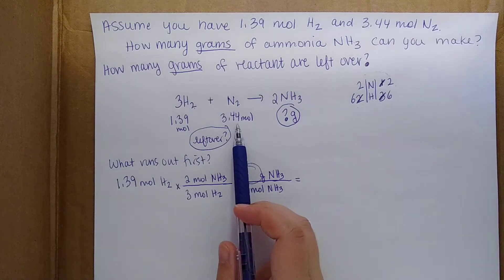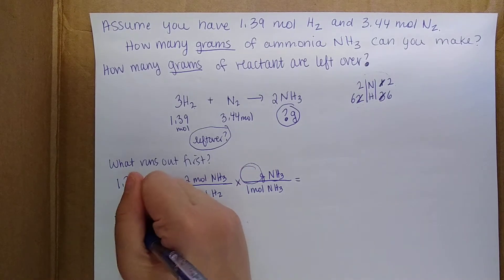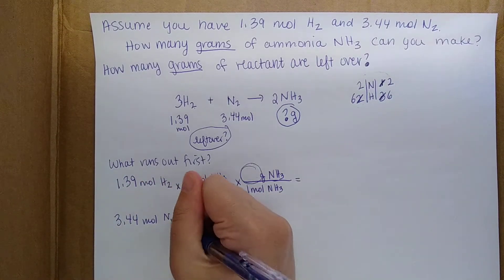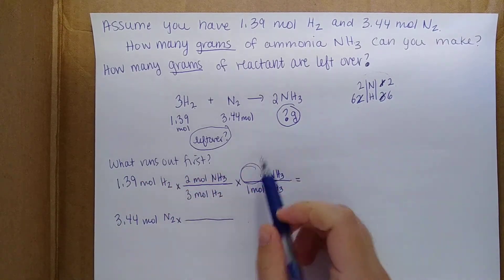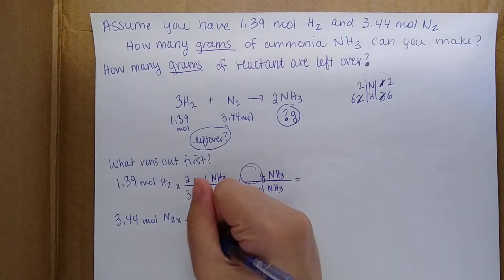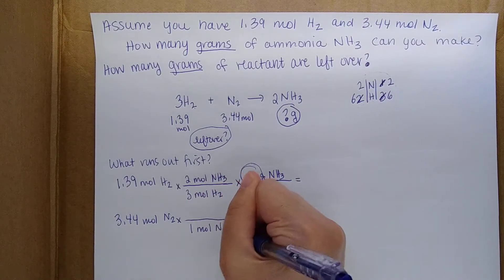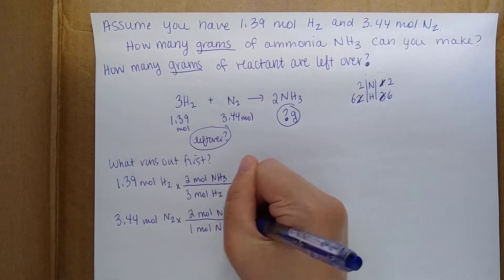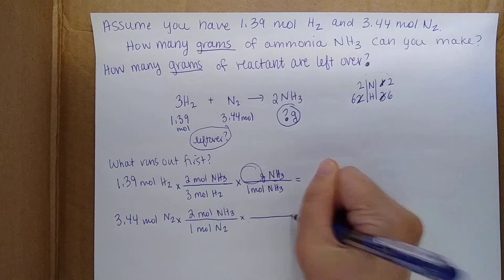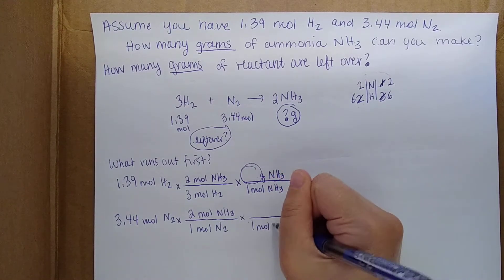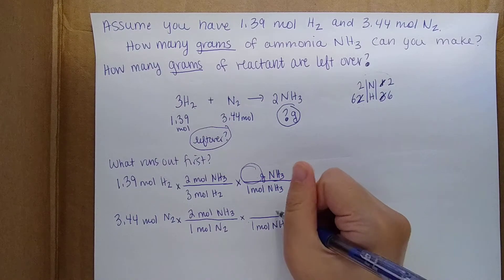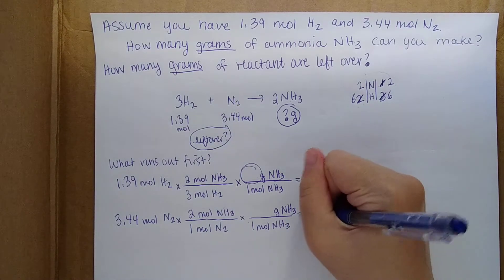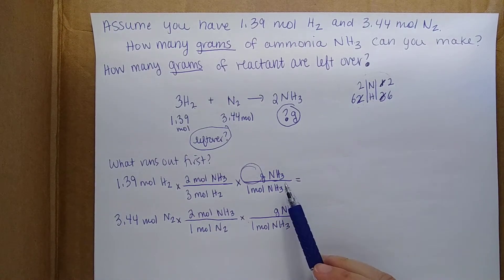Next we look at the other reactant: 3.44 moles of N2. We convert this into product as well — for every 1 mole of N2, there are 2 moles of ammonia. Similarly, we then convert moles of ammonia to grams using the molar mass: 1 mole of ammonia equals however many grams of ammonia.